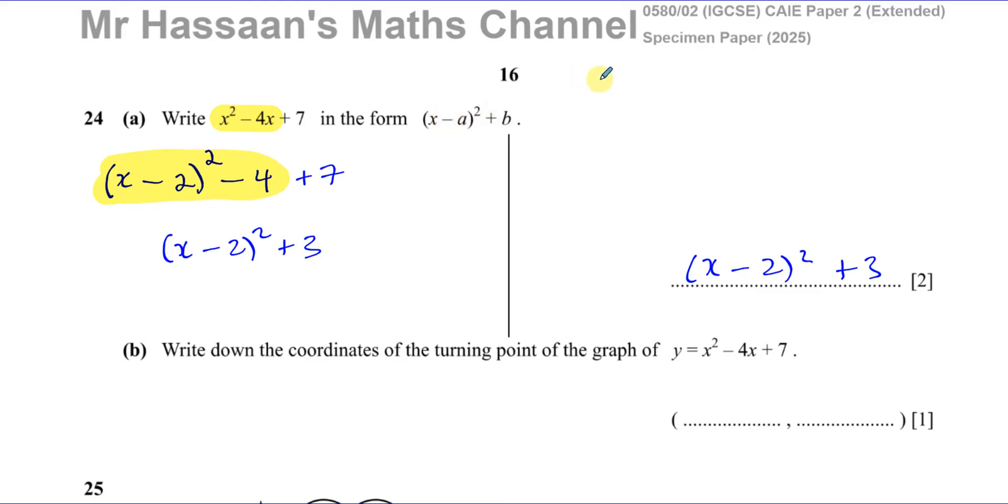You could start off by expanding this bracket, which will give you x squared. If you square a bracket, you square the first term, you multiply the next term together and then double it. So it'll be minus 2ax, then you square the last term, so plus a squared, then plus b. If we compare that to what we have to write in that form, we have x squared minus 4x plus 7.